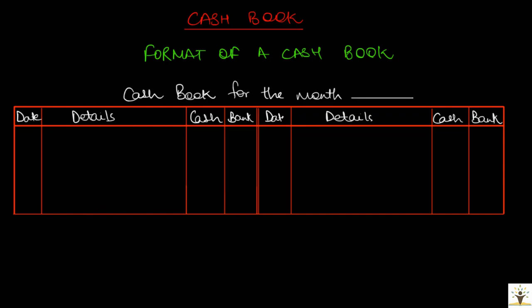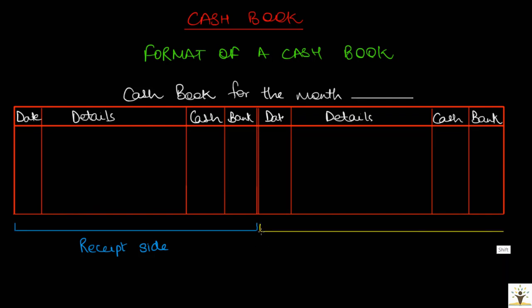Recollecting the rules of debit and credit: cash and bank being assets of the business will be debited if they increase in balance. All receipt transactions will increase the cash or bank balances and shall be recorded on the debit side of the cashbook. Whereas all payment transactions will decrease the cash or bank balance and hence shall be recorded on the credit side of the cashbook.